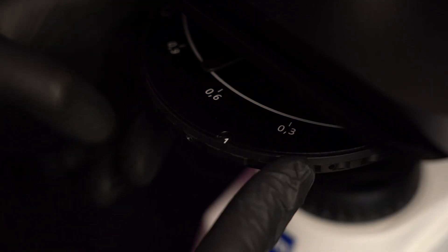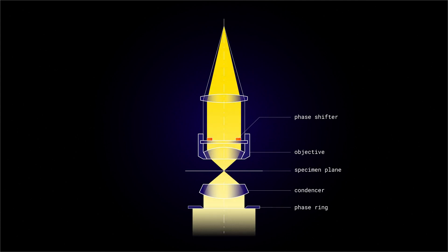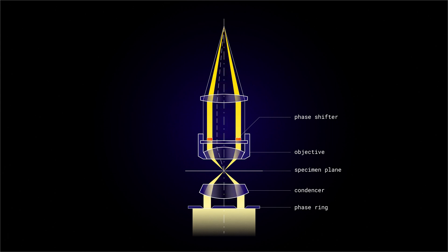So first we need to install the phase ring in the condenser to create a hollow cone of light. The refractive index of our sample will be different from the refractive index of air, so we will have two kinds of light rays. The first – zeroth – is direct light and the second is light diffracted by the sample and shifted by a quarter of wavelengths.